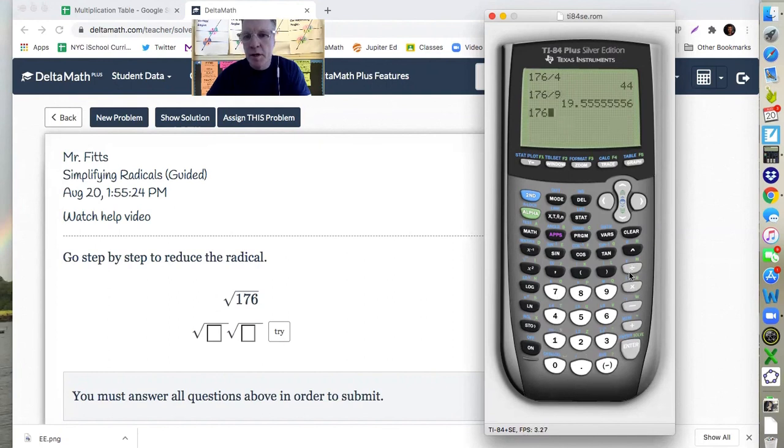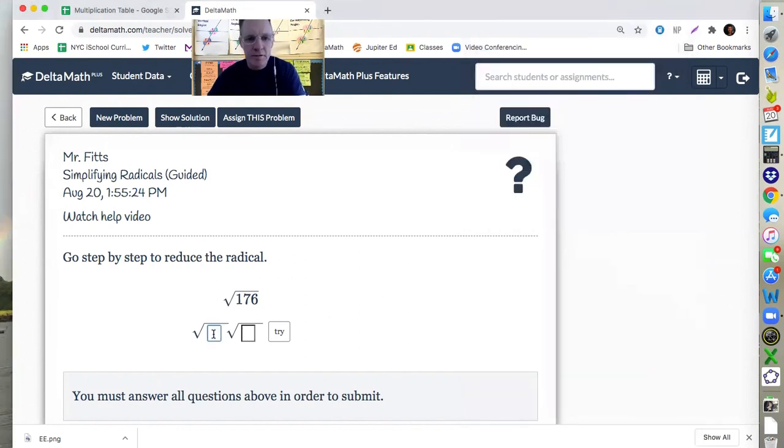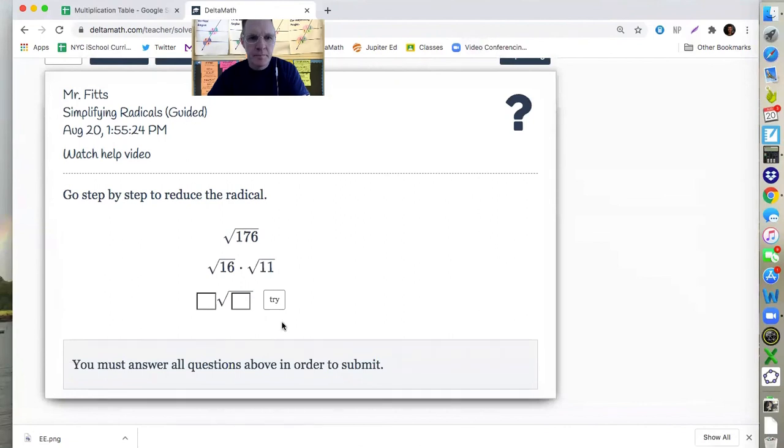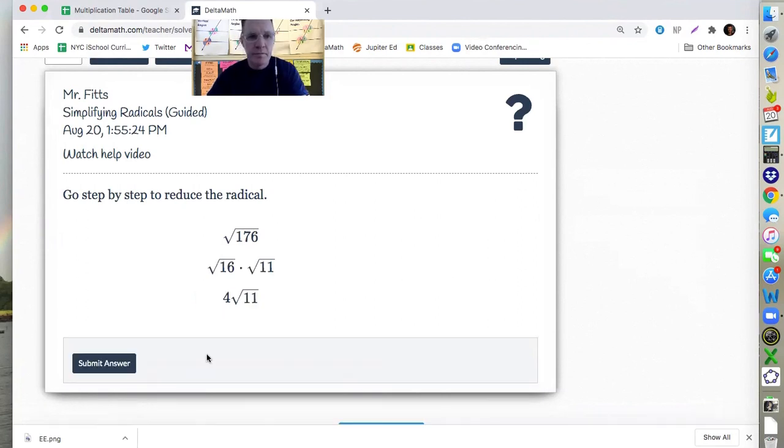176 divided by—what's 4 times 4? 16. Oh, that works. And actually, 11 is prime. So I can't do anything else. So I know 176 is 16 times 11. Well, that's what I'm going to try in here. I'm just going to try 16 and 11. So what is radical 16? That's 4. Submit my answer.